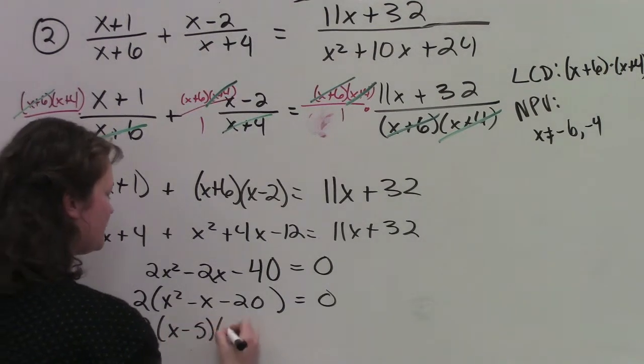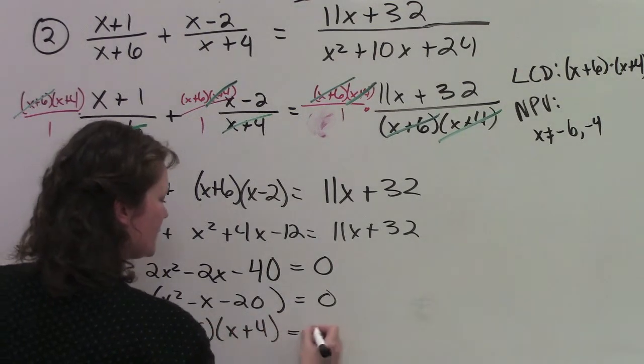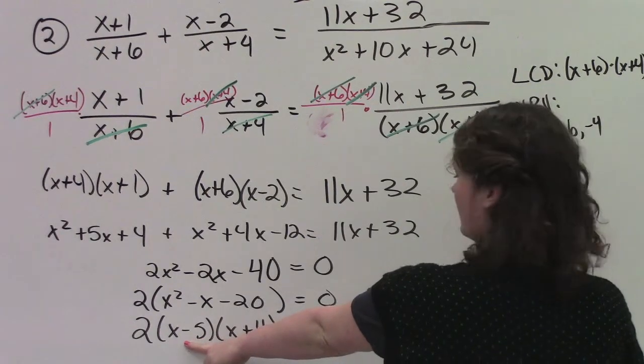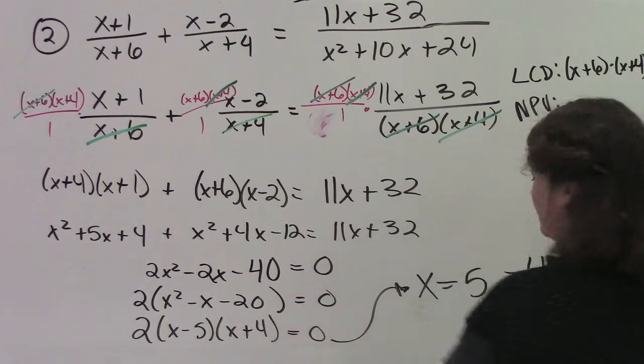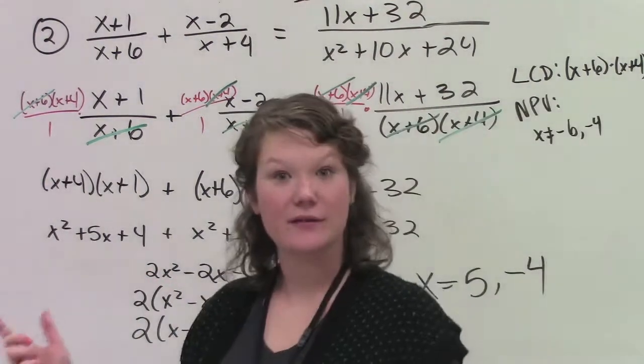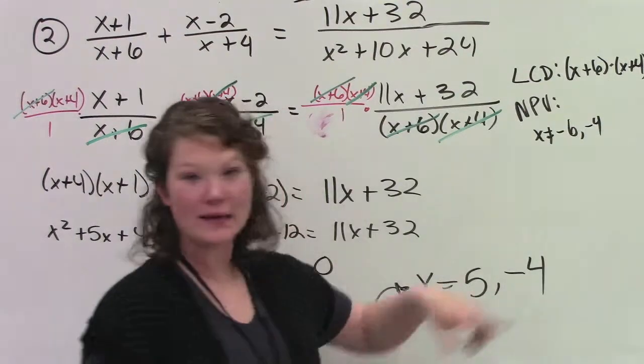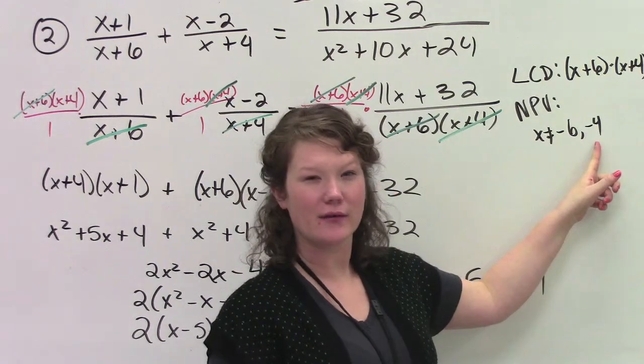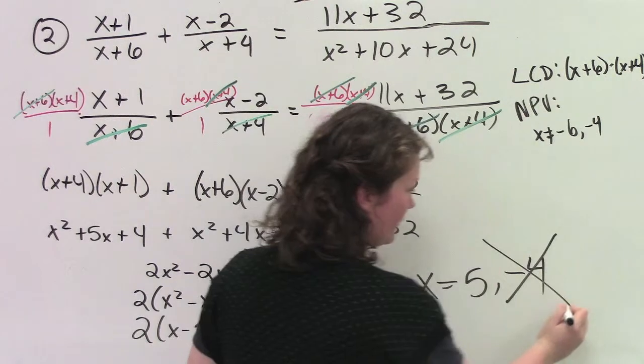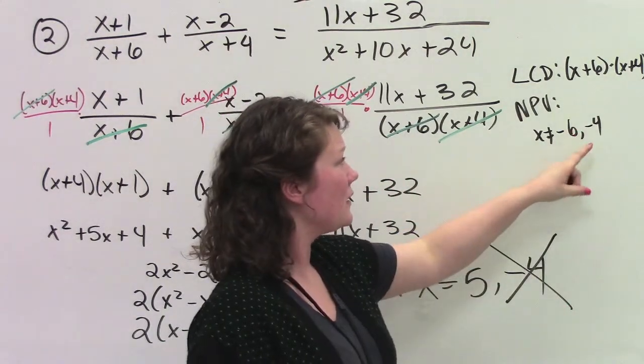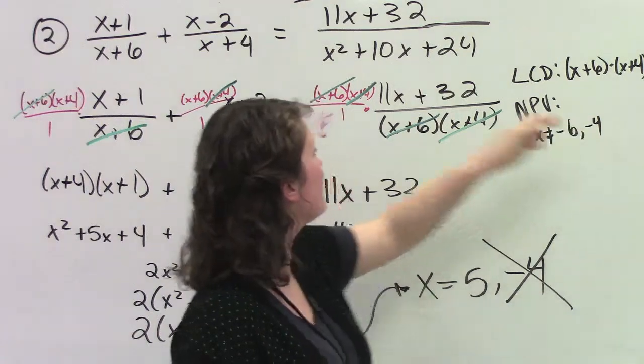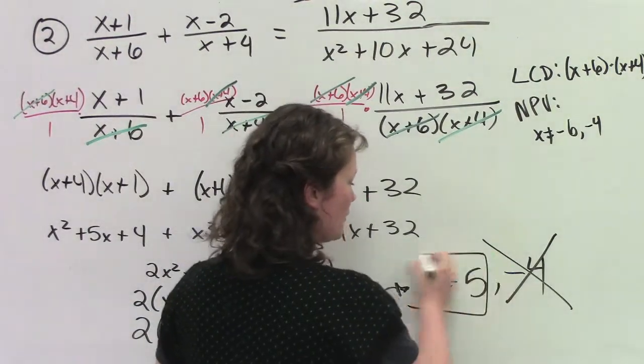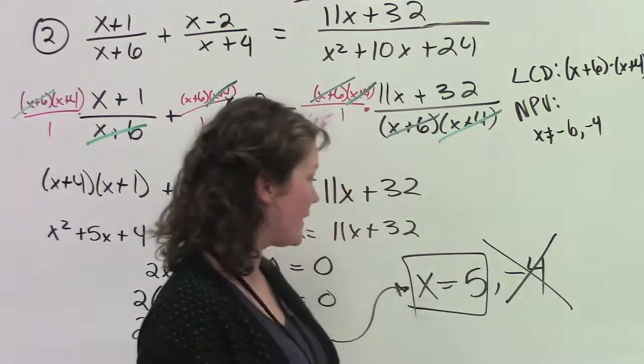2x minus 5, x plus 4 equals 0. So what this tells me here is that x has to equal positive 5 or negative 4. Now hold the phone. Let's double check if this can actually happen. x has to be 5 or negative 4, but x cannot equal negative 6 or negative 4. So that means I have to throw away this option right here, my negative 4, because if it was negative 4, it would bring this denominator and this denominator to 0. We can't have that as part of the solution. So the only solution is x equals 5.